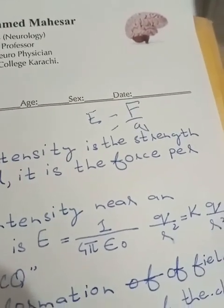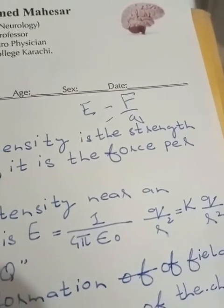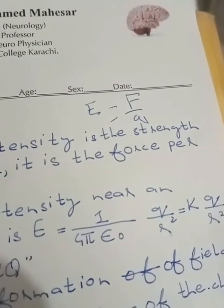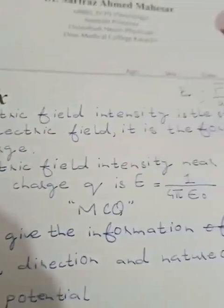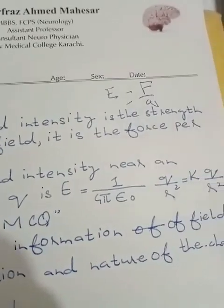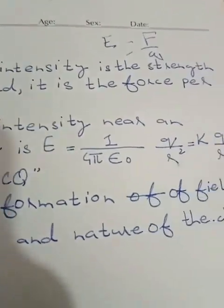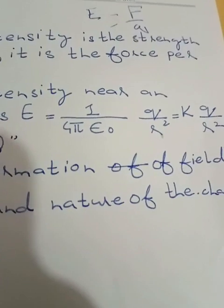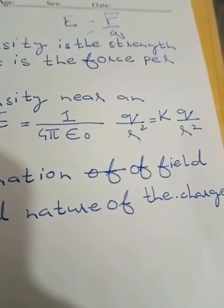The force per unit charge is given by one upon four pi epsilon naught. Electric intensity near an isolated charge Q is equal to one upon four pi epsilon naught, Q upon R squared, which equals K times Q upon R squared.